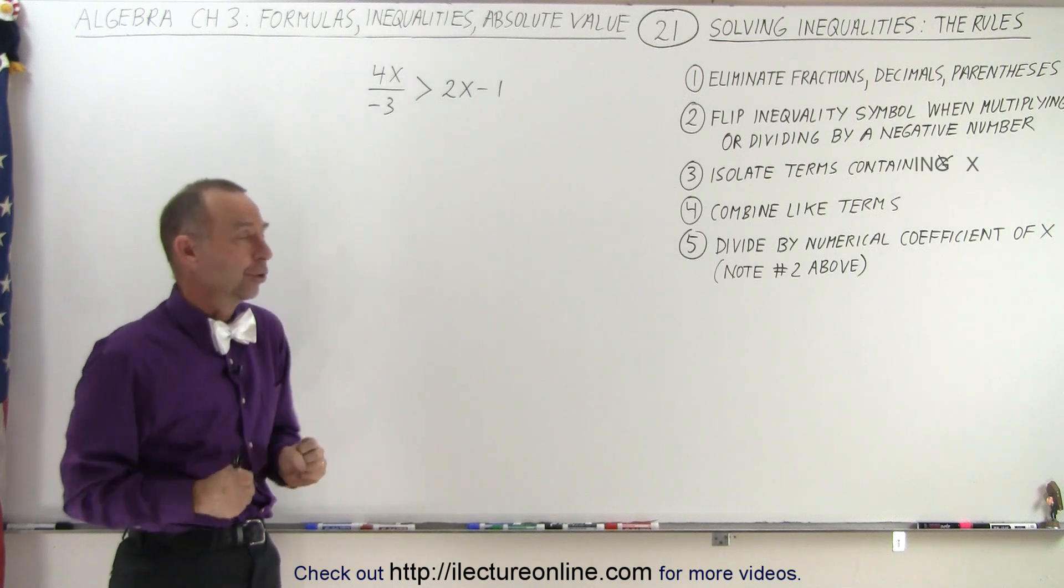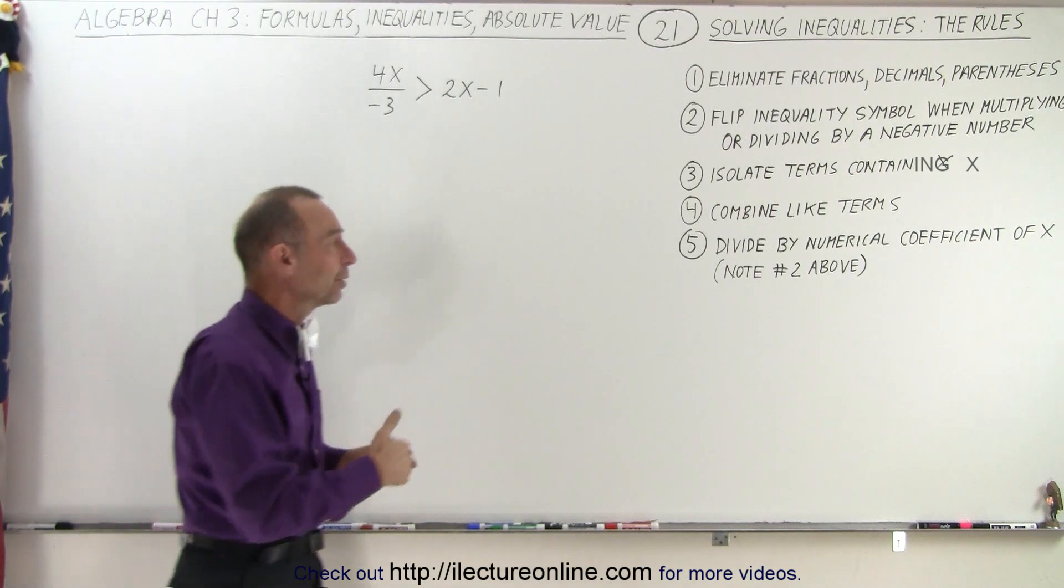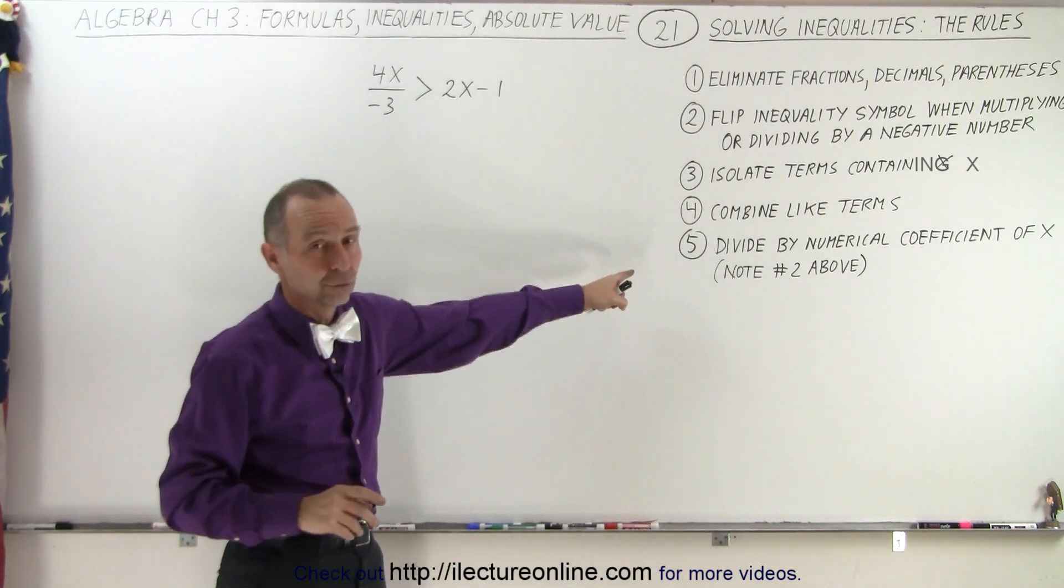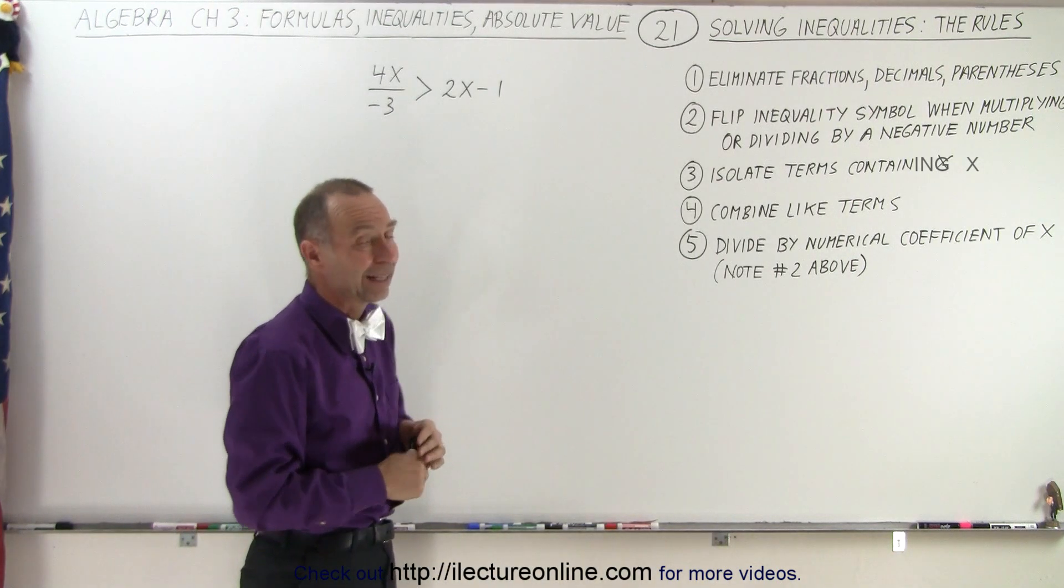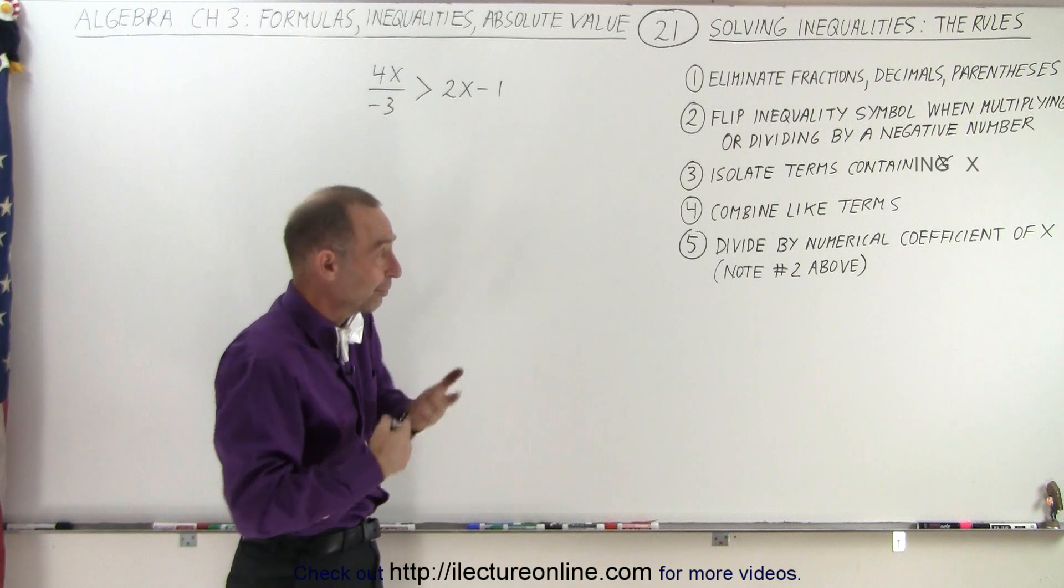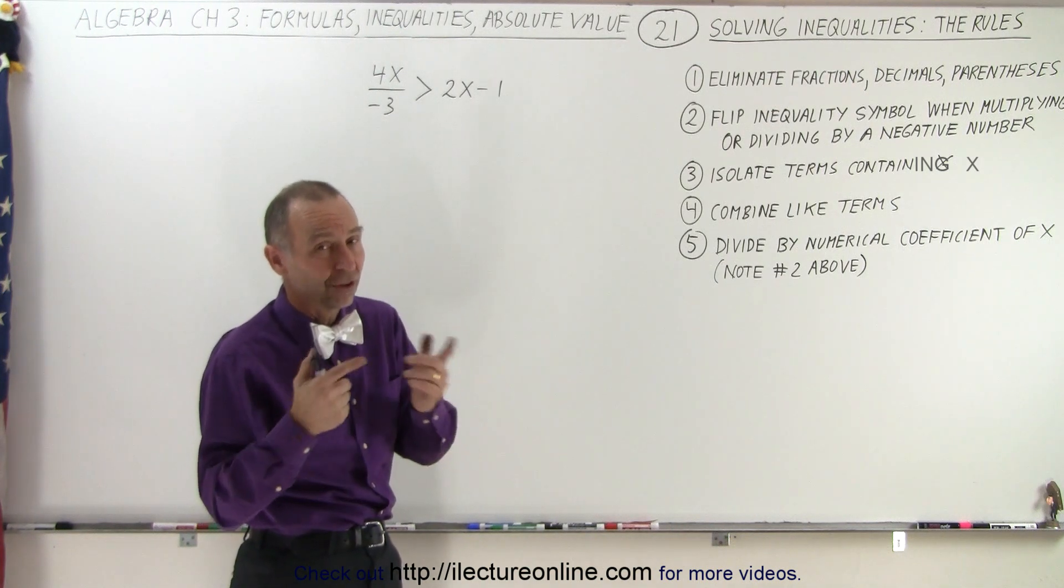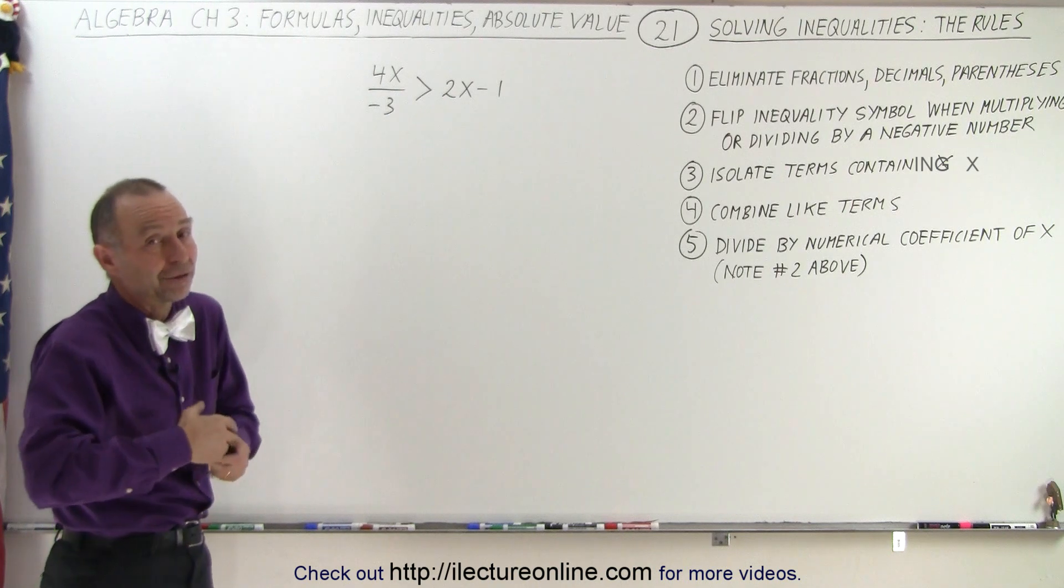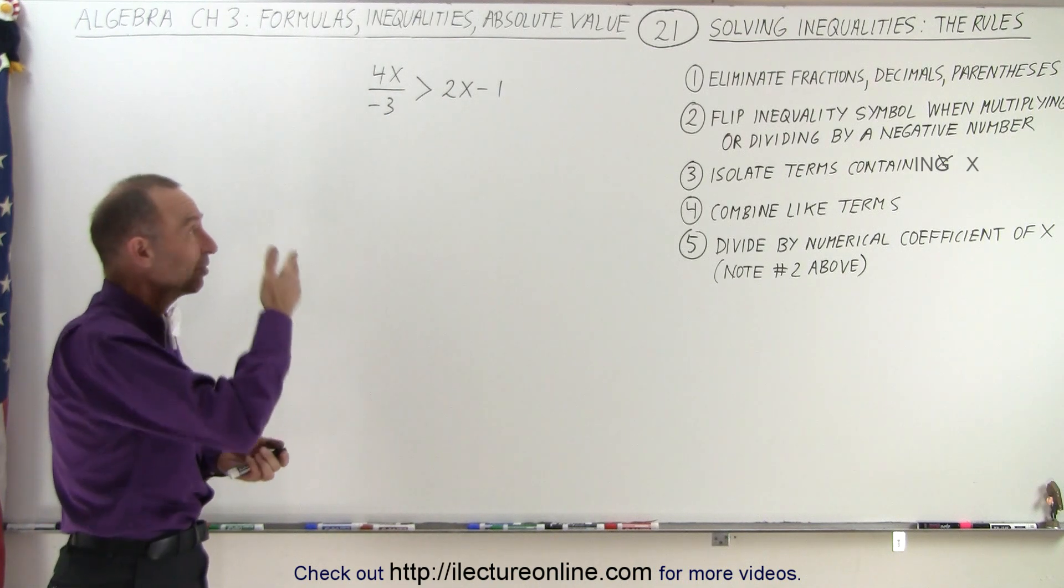Also, we want to combine like terms. And then finally, we want to divide by the numerical coefficient of x. And again, note rule number two above, that if we multiply by a negative number or divide by a negative number, we must change the inequality symbol, flip it over. And so we may have to do that multiple times during the same exercise.